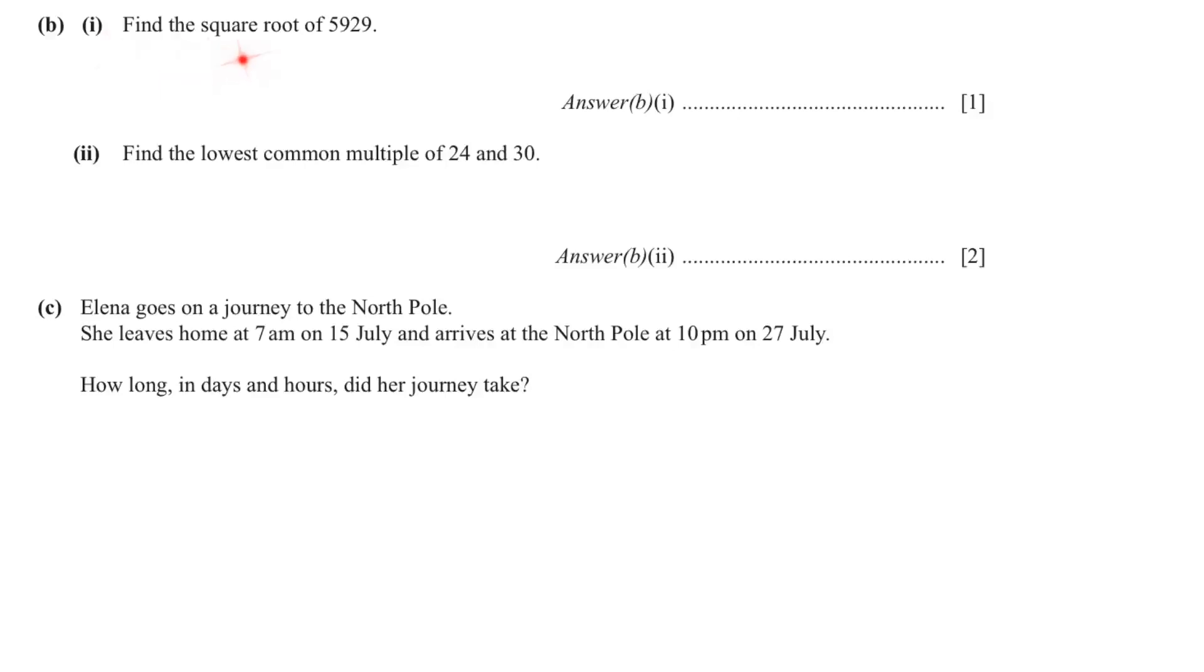B1. Find the square root of 5929. We just have to write in the calculator and we will get the answer which is 77. B2. Find the lowest common multiple of 24 and 30. We will write the multiples of 24 and the multiples of 30 and see which is common. 24 times 1 is 24, 24 times 2 is 48, 24 times 3 is 72. We continue like that. The same we will do with 30, and we can see that 120 is the lowest common multiple.